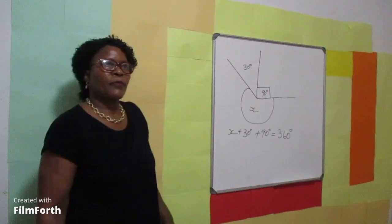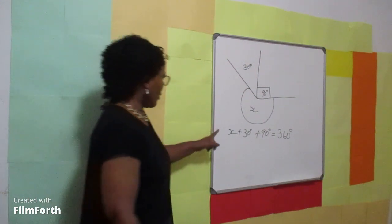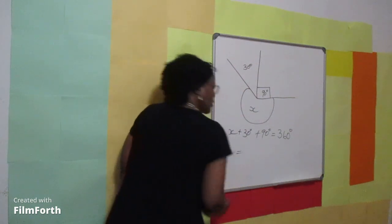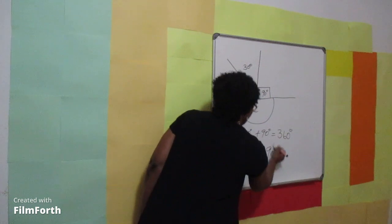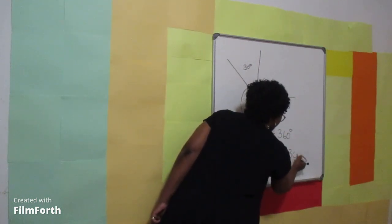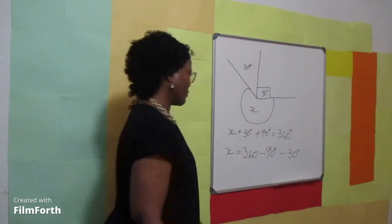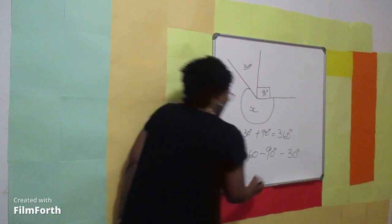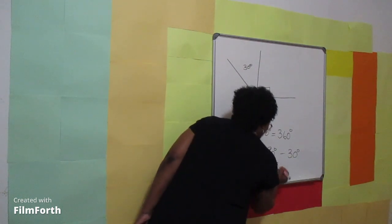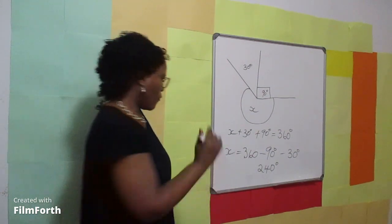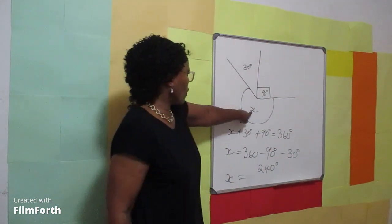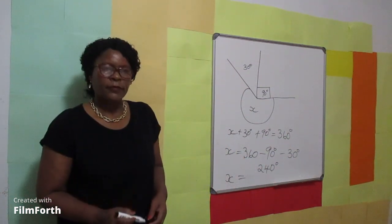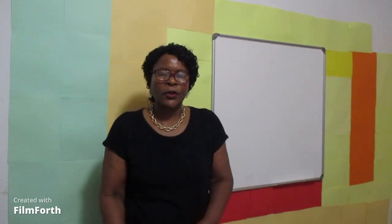What is the value of x? x is equal to 360 take away 90 degrees and take away 30 degrees. The value of x is 240 degrees. The value of x is 240 degrees. If we are going to practice all the three properties on a straight line, give this video a thumbs up.